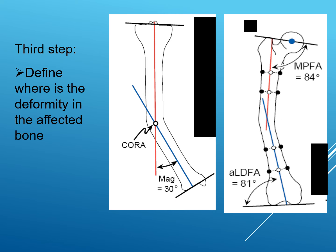To summarize the three-step deformity analysis: Step 1 — draw the mechanical axis of the whole limb to determine if there is varus or valgus and the magnitude (MAD). Step 2 — measure mLDFA and MPTA to determine whether the deformity is in the femur, tibia, or both. Step 3 — determine which part of the bone is affected by drawing the anatomical axes of the proximal and distal segments and finding where they intersect, which is the CORA.